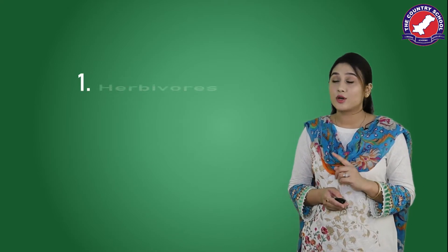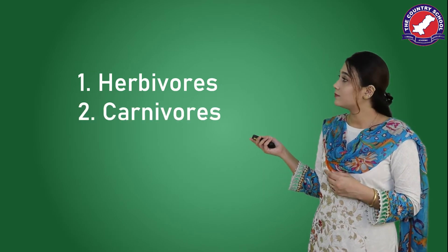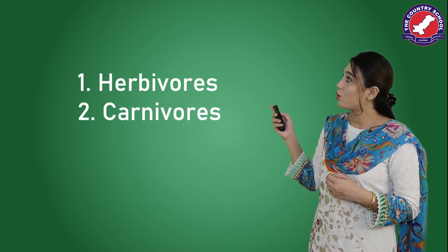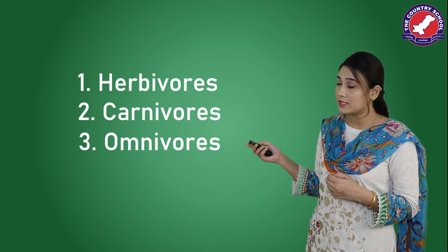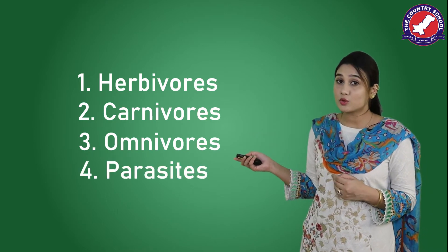According to adaptation for food, the animals are divided into four categories: herbivores, carnivores, omnivores, and parasites. I am sure you have heard of a few types previously as well. Let's learn about each of them.